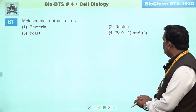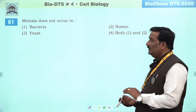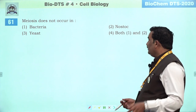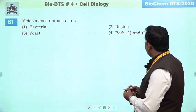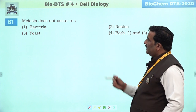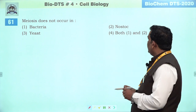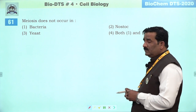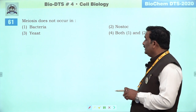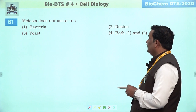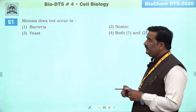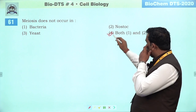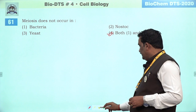Next question: meiosis does not occur in. Meiosis aur mitosis prokaryote mein nahi hoti. Bacteria are prokaryote, as well as Nostoc also prokaryote — both do not represent meiosis. Fourth is the right answer.